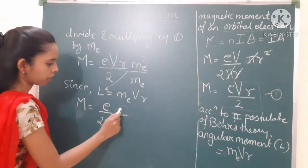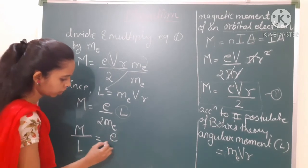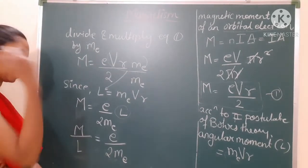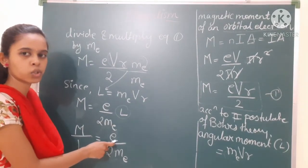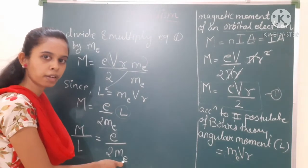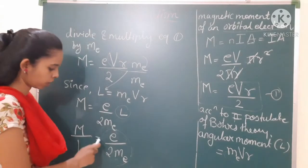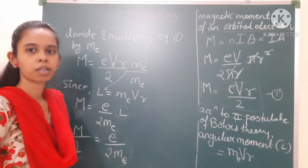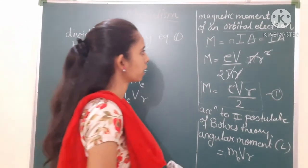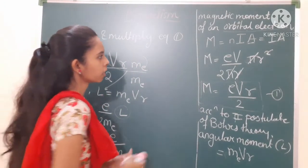Taking L to one side, M/L = e/(2m). Here e is the charge of the electron, 2 is a constant, and m is the mass of the electron — all constants. Therefore this ratio M/L is a constant, and this constant is called the gyromagnetic ratio. The gyromagnetic ratio equals e/(2m).